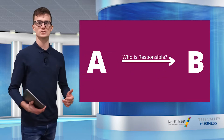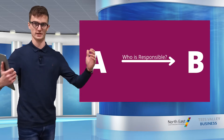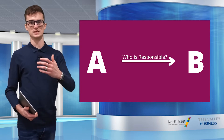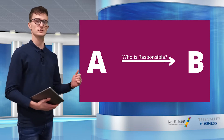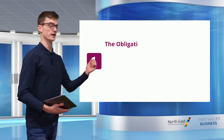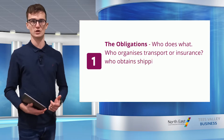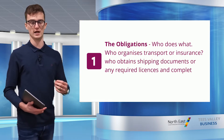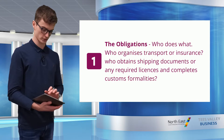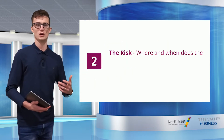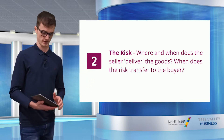The easiest way to describe Incoterms is they outline how the goods will be transported from A to B — the seller to the buyer — and the actions or responsibilities of each party on that journey. There are three main pillars which Incoterms dictate: firstly, the obligations — who does what, such as who organises transport or insurance. Secondly, the risk — where and when does the seller deliver the goods and when does that risk transfer to the buyer.